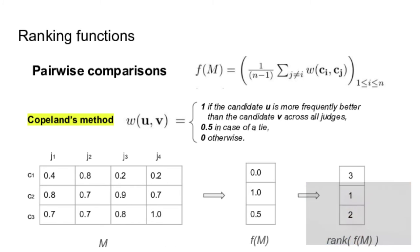The first one is the Copeland's method. So here, the W function equals 1 if the candidate is more frequently better than the other candidate, 0.5 in case of a tie and 0 otherwise. So, for example, here in this table, C2 is more frequently better than both C1 and C3 across all the judges. So it obtains a perfect score. So somehow, it counts the number of adversaries that the candidate can surpass.